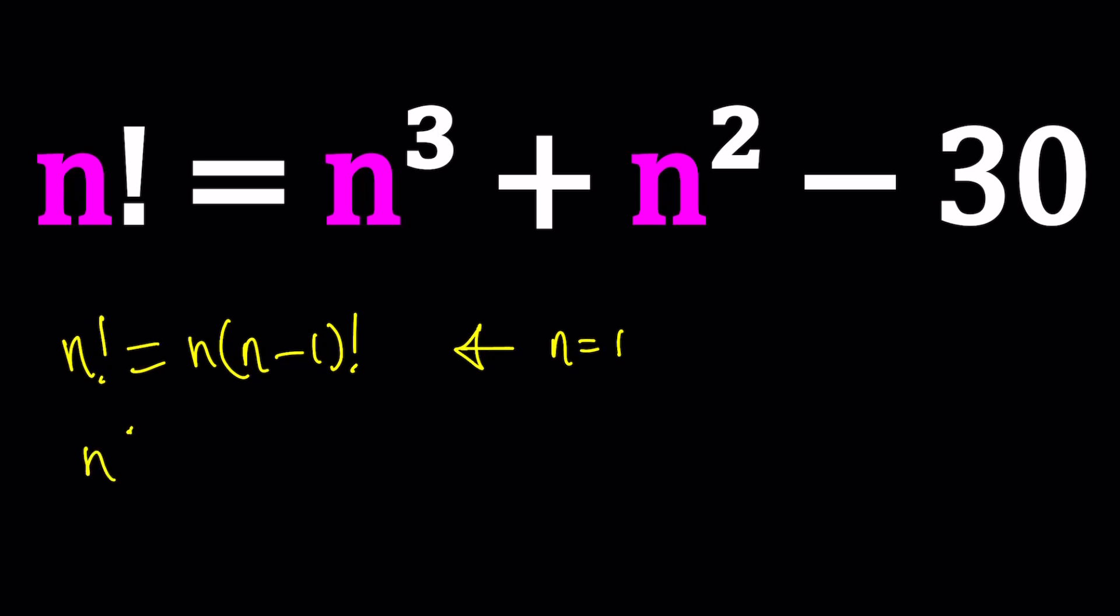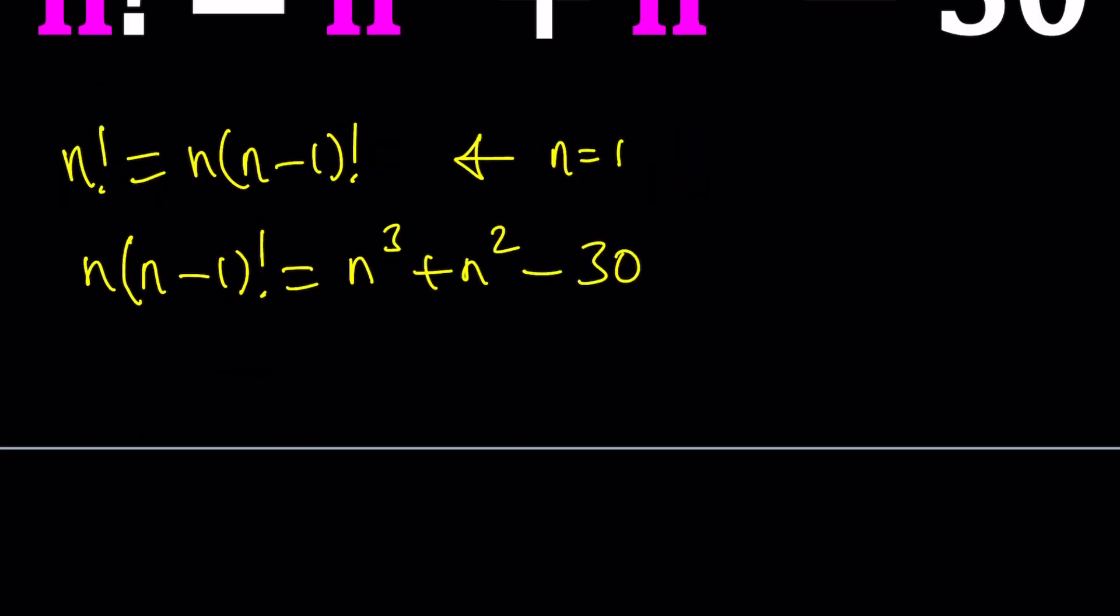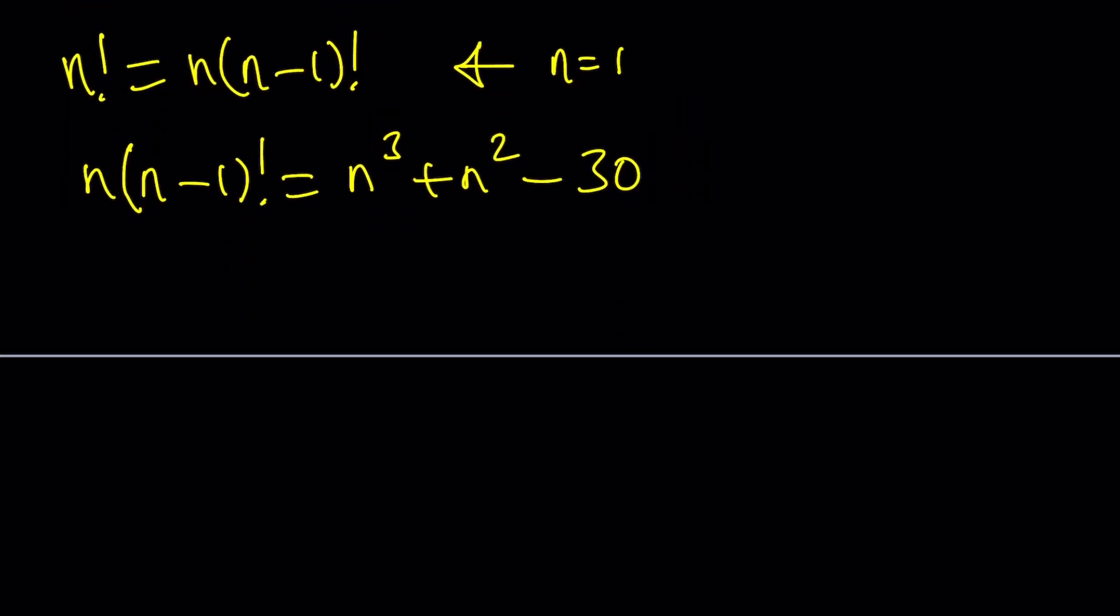So after writing this as n times n minus 1 factorial, I can actually go ahead and divide both sides by n. And what good does that do? Well, first of all, it simplifies the problem a little bit because we kind of get a quadratic. But not only that, if we divide everything by n, this also gives us something nice. You'll see in a bit what that means. n minus 1 factorial equals n squared, and this is n, and this is 30 over n.